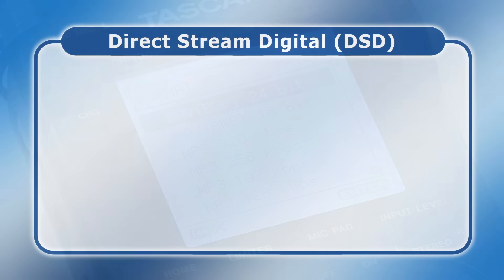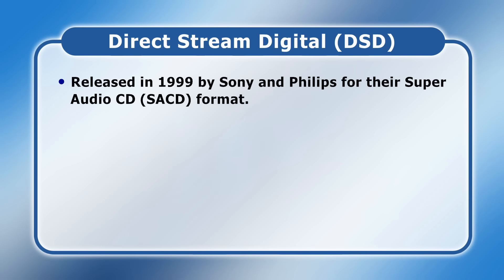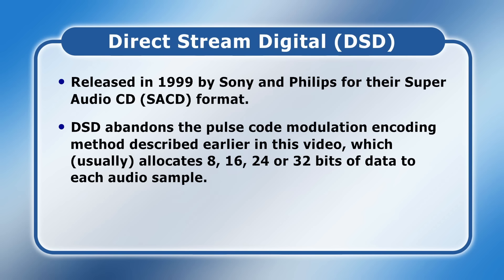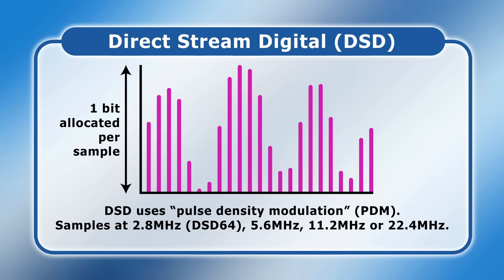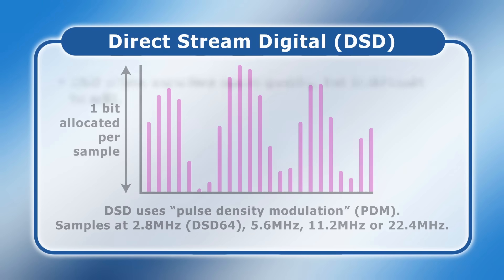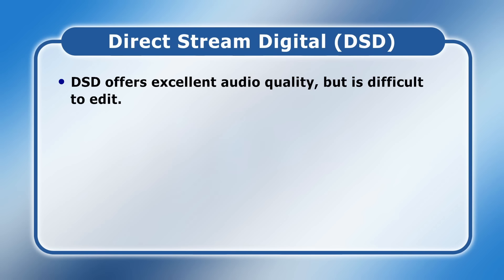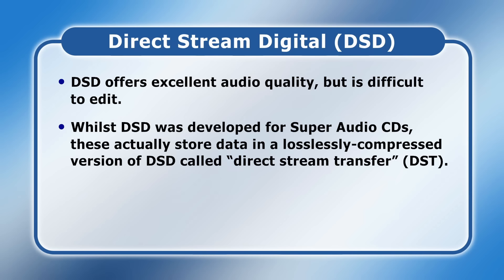A niche non-compressed audio format is Direct Stream Digital or DSD, released in 1999 by Sony and Philips for their Super Audio CD format. DSD abandons pulse code modulation and instead uses pulse density modulation, which allocates just one bit per sample to indicate if the current sample is higher or lower than the previous one. DSD has a sample rate of 2.8 MHz for a variant called DSD64, with other variants sampling at 5.6, 11.2 and even 22.4 MHz. DSD offers excellent quality audio but is difficult to edit, and Super Audio CDs actually store data in a losslessly compressed version of DSD called Direct Stream Transfer or DST.